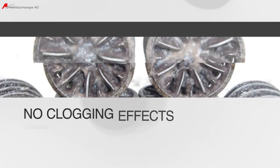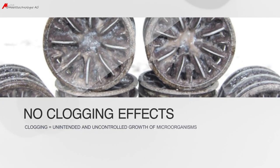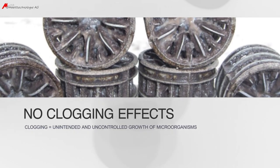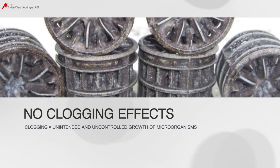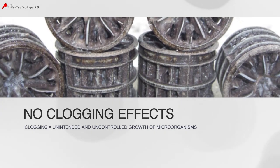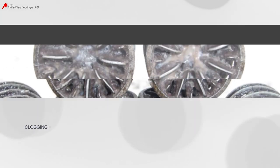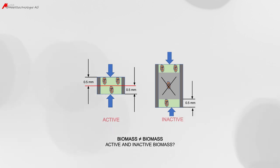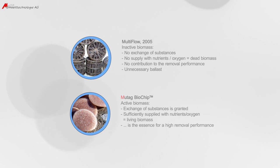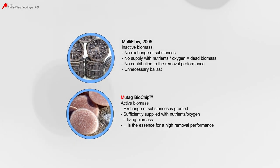A clogging or blocking of the Mutag Biochip cannot occur, whereas clogging shall mean the unintended and uncontrolled growth of microorganisms, as it can be observed with many conventional tube-shaped carriers. It is of special importance to distinguish between active and inactive biomass. Active biomass is kept on the carrier and contributes to the removal performance, while inactive biomass is dead biomass, which can clog conventional carriers and only reduces the removal performance.